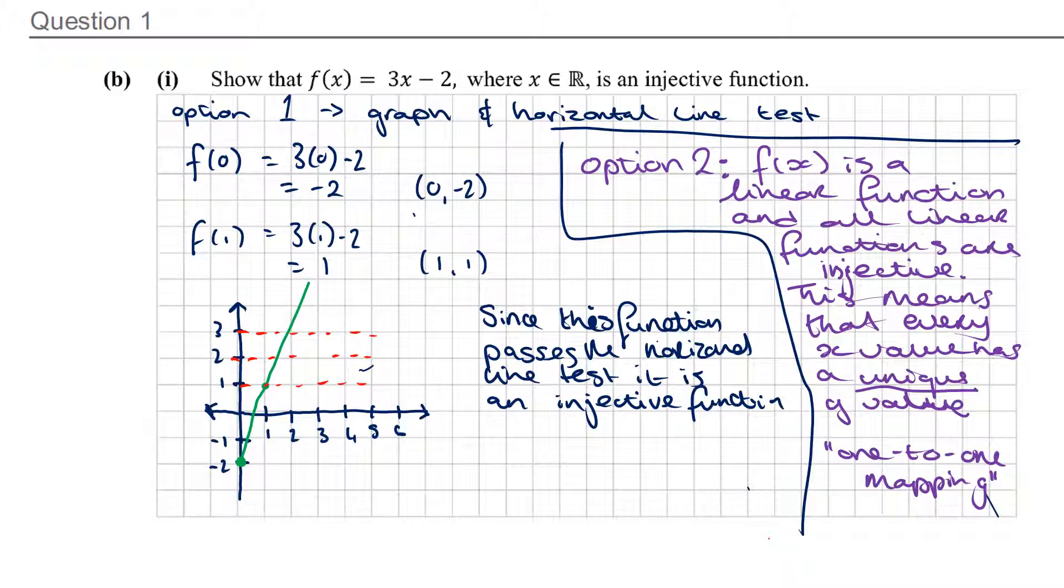So these will be the two main options for answering. First one will be graphing, and I would always say graph is easy. You get your point across. Sometimes when you're trying to explain it in words like with option 2, you mightn't put everything in that you need. But basically based on the fact that it is a linear function, we're fine to say that it's injective.